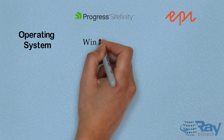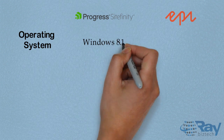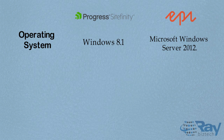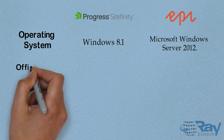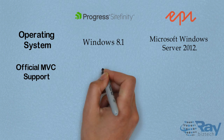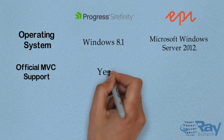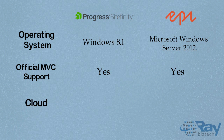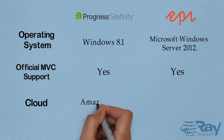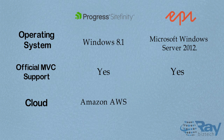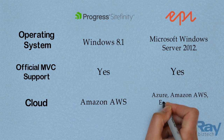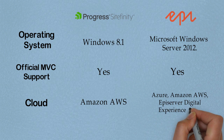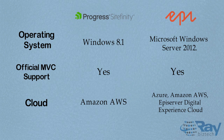Operating System for Progress Site Affinity is Windows 8.1, and for API Server it is Microsoft Windows Server 2012. Both support MVC and Site Affinity 2. Cloud for Site Affinity is Amazon AWS, while API Server supports Azure, Amazon AWS, and the API Server Digital Experience Cloud.